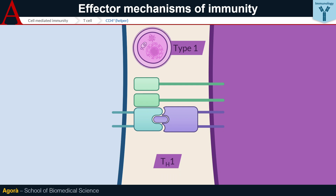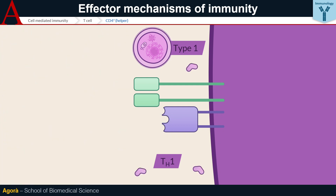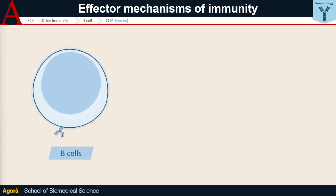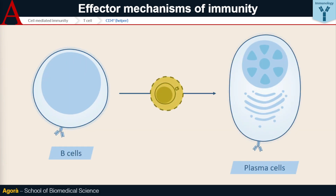This lymphocyte begins to produce several mediators, including IFN-gamma, which is able to promote macrophage killing mechanisms and lead to the removal of the bacterium. By similar mechanisms, depending on the immune microenvironment and the type of pathogen, TH2 or TH17 may develop. By these mechanisms, TH cells also activate B cells, promoting their differentiation into plasma cells and their antibody production.